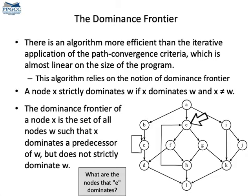To pave the way for a nice algorithm to place phi functions in the program, we need to define the notion of dominance frontier. First, let's talk about strict dominance: a node x dominates another node w strictly if x dominates w and x is not w. The dominance frontier of a node x is the set of all nodes w such that x dominates a predecessor of w but does not dominate w strictly.